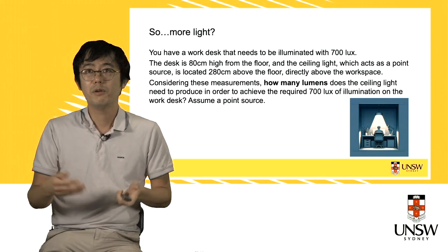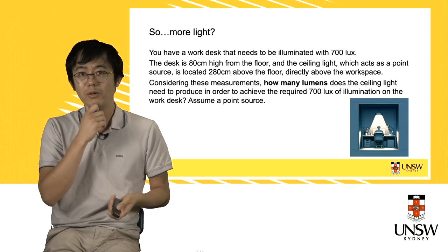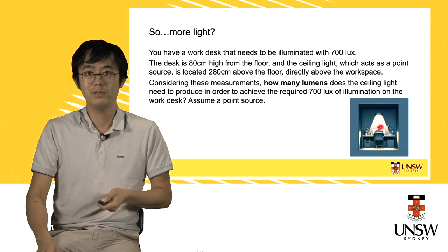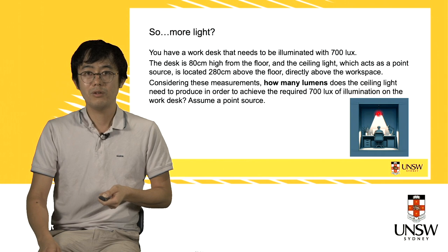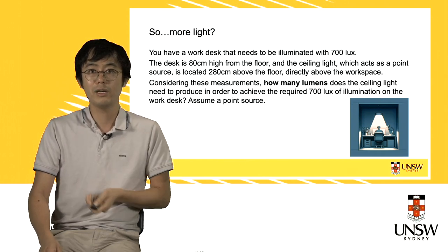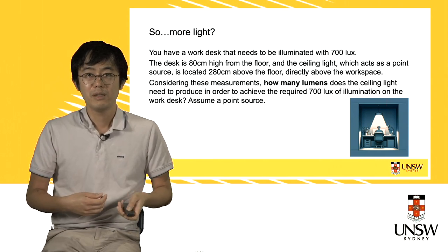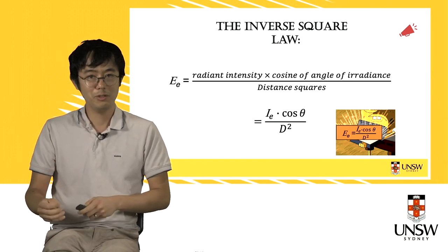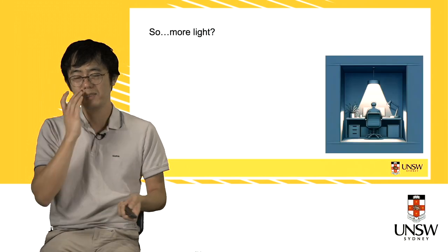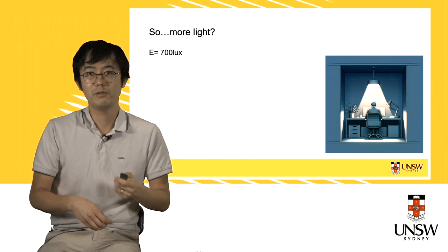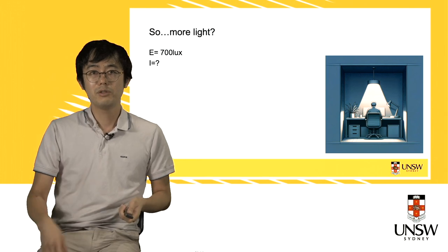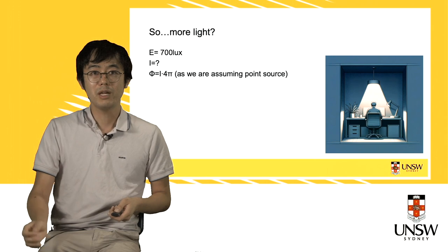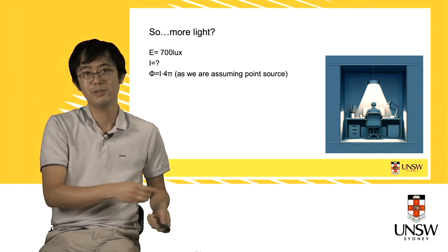So how do you get 700 lux? Here's an example. For this desk you need 700 lux. There's a ceiling 2.8 meters above the floor, and the desk is 80 centimeters above the floor. The patient is asking what kind of light bulb — how many lumens — do we need? Going back to the reliable inverse square law, which is useful in both radiometry and photometry: we need 700 lux on the table. We need to find the intensity. The lamp is 2.8 meters above the floor and the desk surface is 80 centimeters above the floor, so the distance is 2 meters.